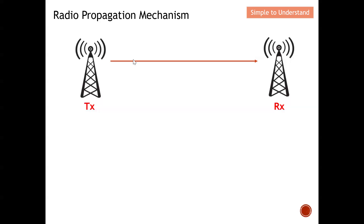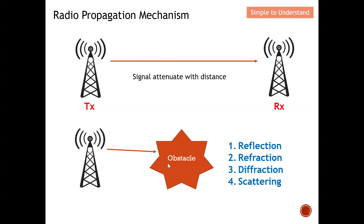Here we have a transmitter and a receiver. What I want to do is send a message from the transmitter to the receiver. The signal will attenuate with distance, meaning the signal strength becomes smaller and smaller as it propagates. When the EM wave hits an obstacle, there may be four possible outcomes: the first is reflection, the second is refraction, the third is diffraction, and the last is scattering. This video we are going to study these four scenarios which may change the radio propagation path.